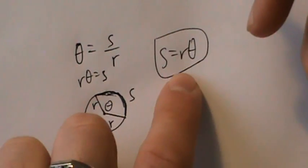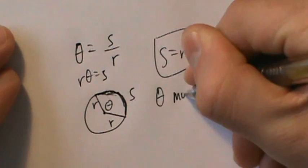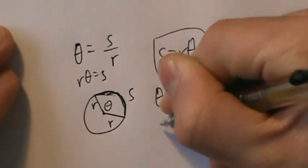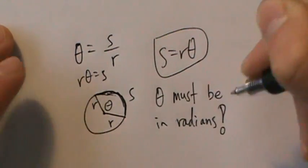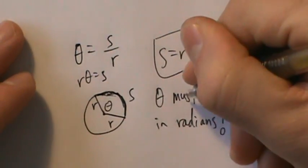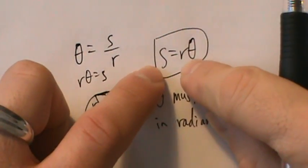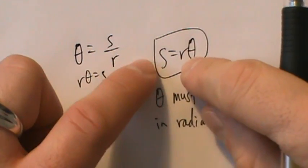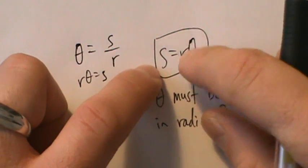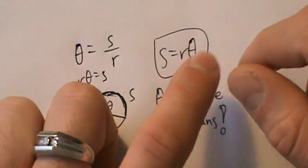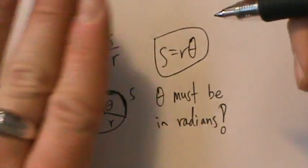You might not always be looking for s — you might be looking for r or theta, and we'll do one example of each. The important thing is that theta must be in radians before you can use this formula. If theta is not in radians, just convert it to radians using the appropriate conversion factor and you'll be good to go. S and r can have any units — centimeters, millimeters, inches, feet, miles, kilometers — but they're going to be the same units. Theta always has to be in radians.